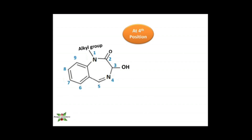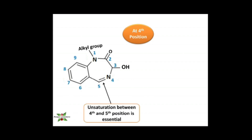At position four, there should be unsaturation — specifically a double bond between positions four and five — because saturation reduces the activity. No other substitution is needed at position four.